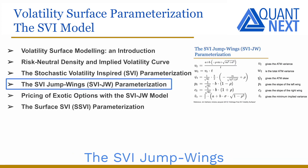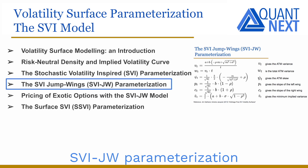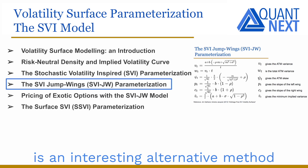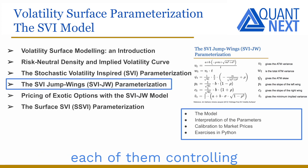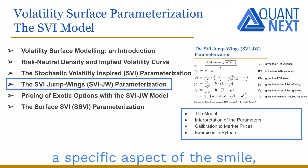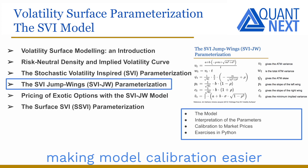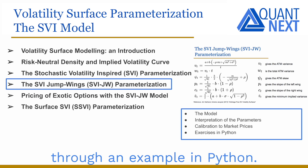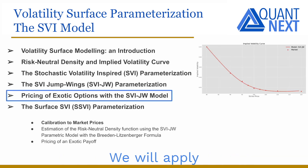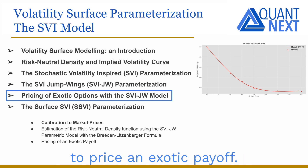The SVI Jumpwings SVI-JW parameterization is an interesting alternative method where the different parameters have a concrete interpretation, each of them controlling a specific aspect of the smile, making model calibration easier and more robust. We will see that concretely through an example in Python.